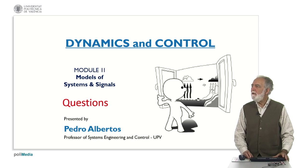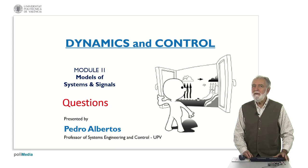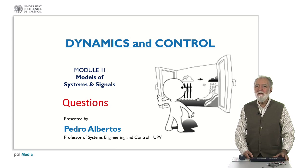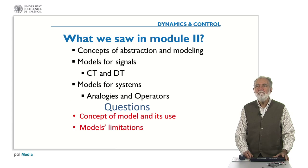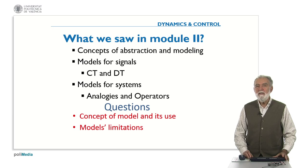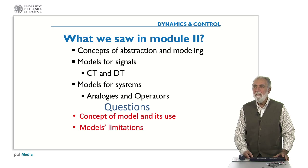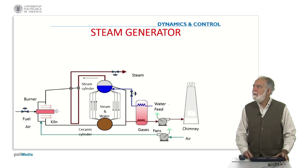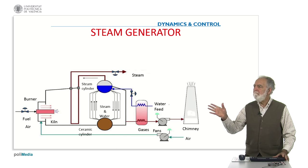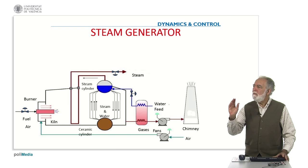Hello, we are going to review the last question related to Module 2, about the models for systems and signals. Again, we are going to consider the way we can derive a model of a complex system and the limitations that we must consider. Probably you remember this steam generator with many subsystems, the burner,